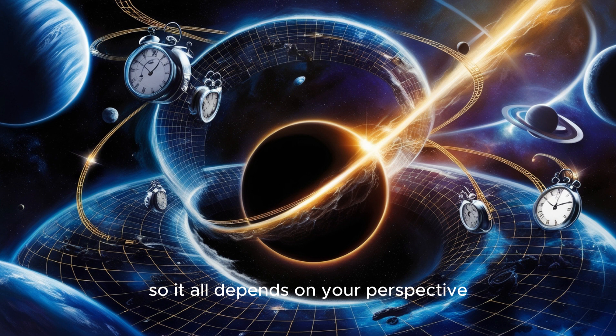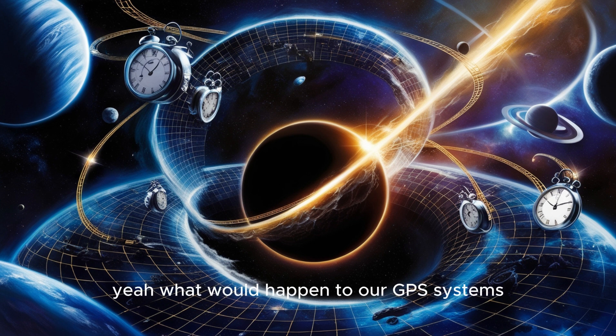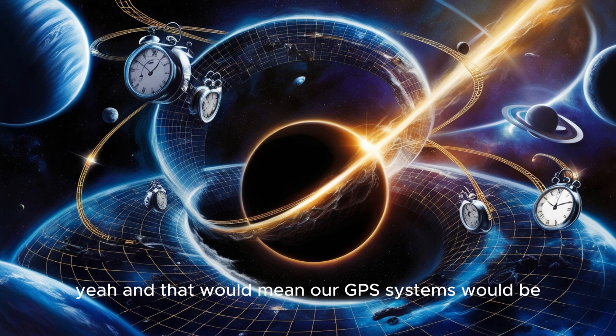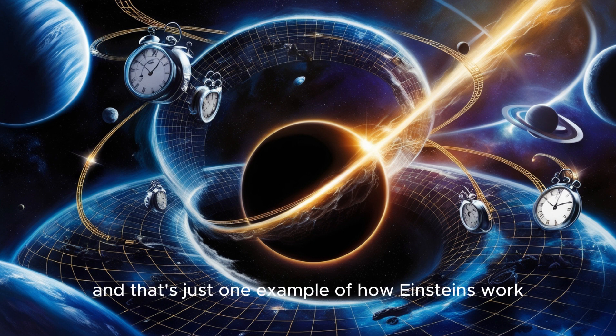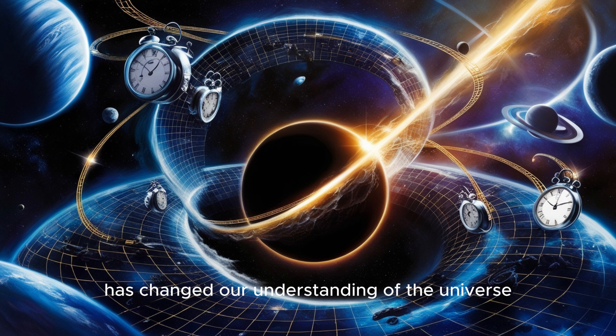So it all depends on your perspective. But if we didn't account for these tiny time differences, what would happen to our GPS systems? Well, the GPS signals would drift out of sync, and that would mean our GPS systems would be totally inaccurate. Your GPS might tell you you're miles away from where you actually are. So Einstein's theory of relativity isn't just some crazy idea. It's literally built into the technology we use every day. Exactly.